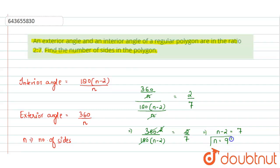That means the number of sides in this regular polygon is 9. I hope you have understood. Thank you.